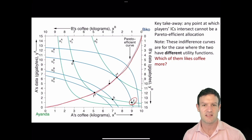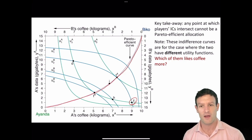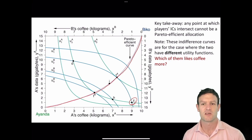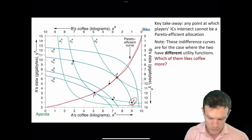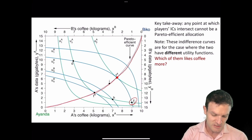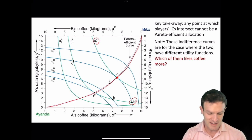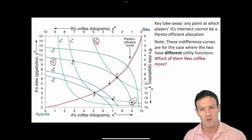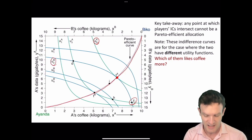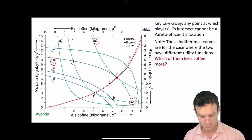All the points along the Pareto efficient curve are points where there is tangency between the two players' indifference curves. If we consider point TA, A's indifference curve U3A is tangent to UBZ — that point is a point of tangency between the indifference curves.